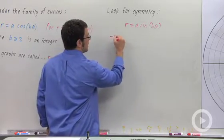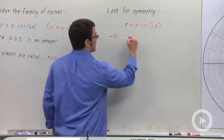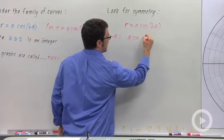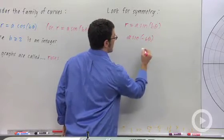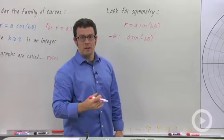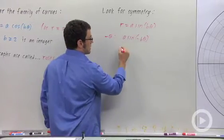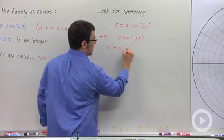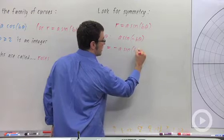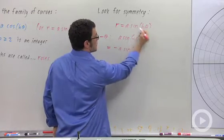So first of all, I plug in negative theta and I get a sine of negative b theta. Recall that sine is an odd function, so we can pass the minus sign outside. We get negative a sine of b theta, and that's exactly the opposite of r.